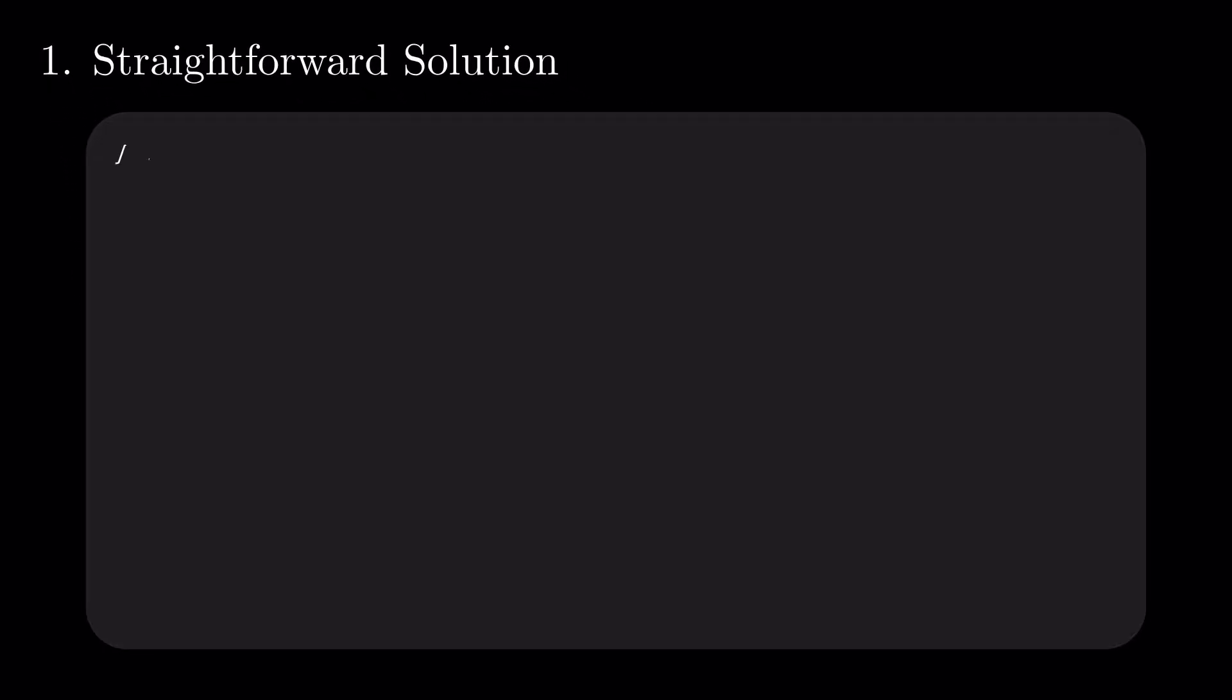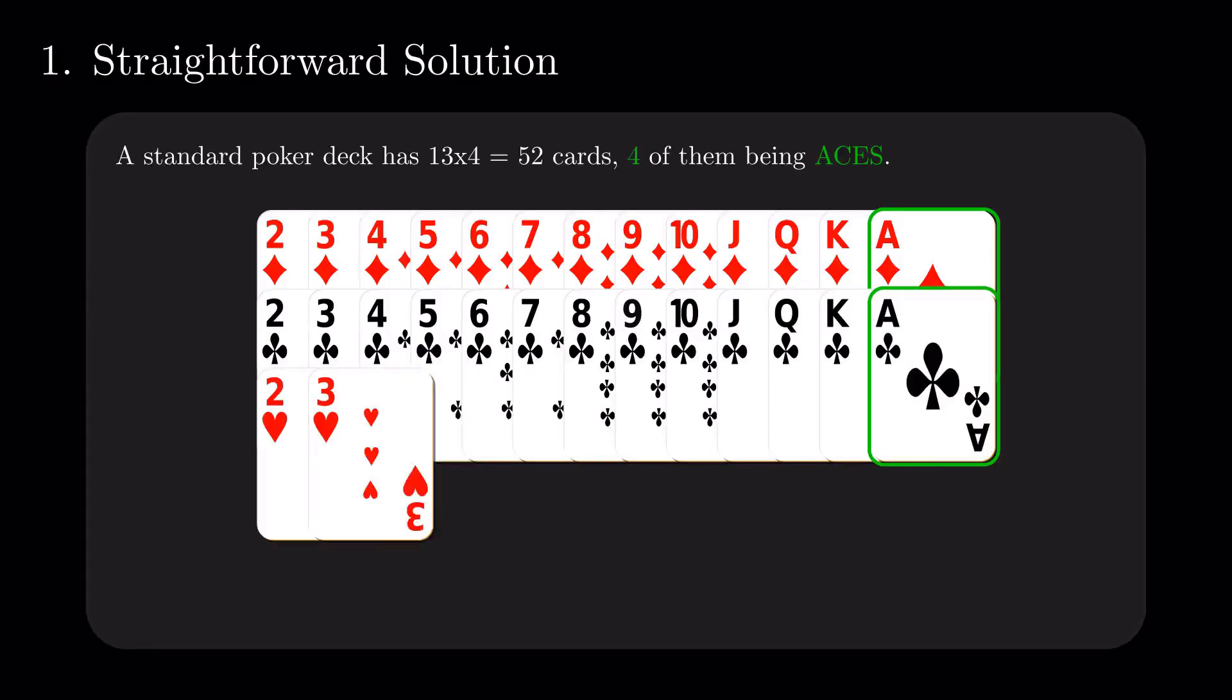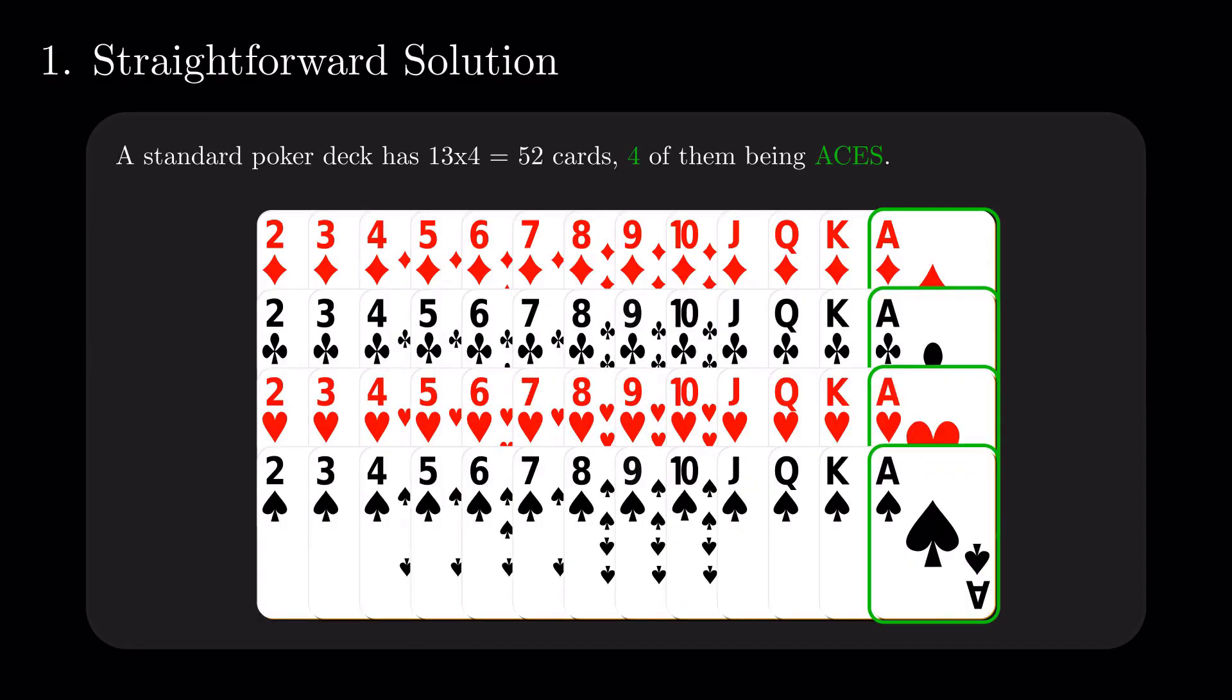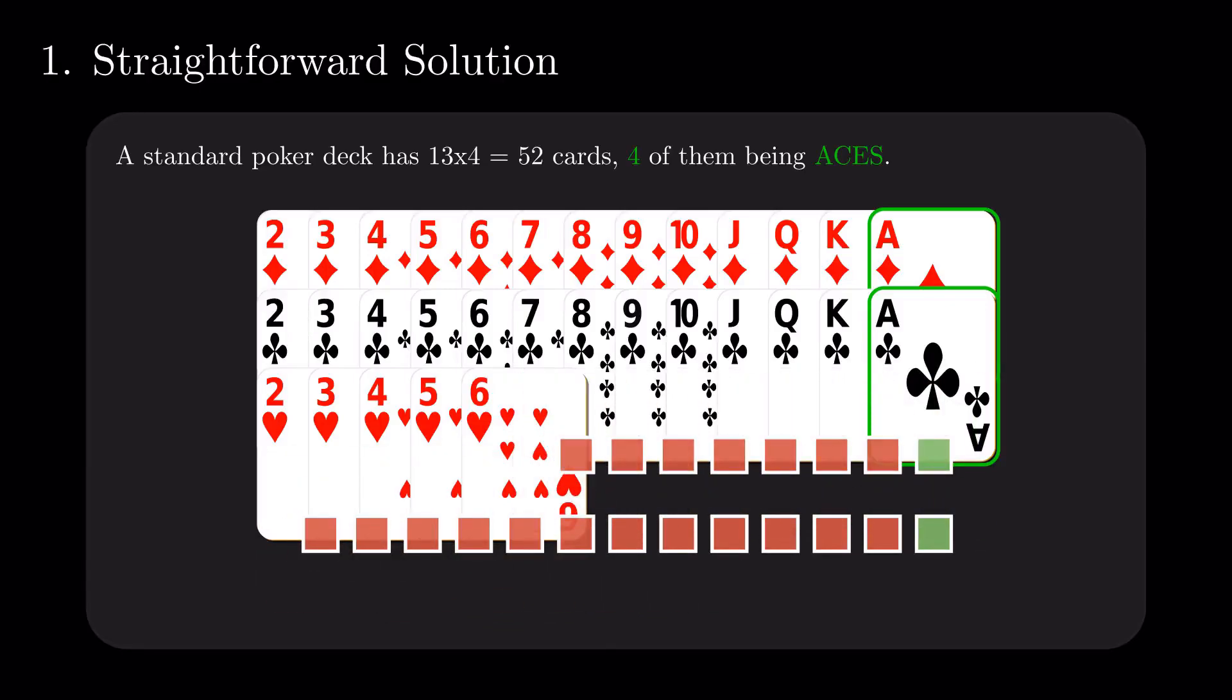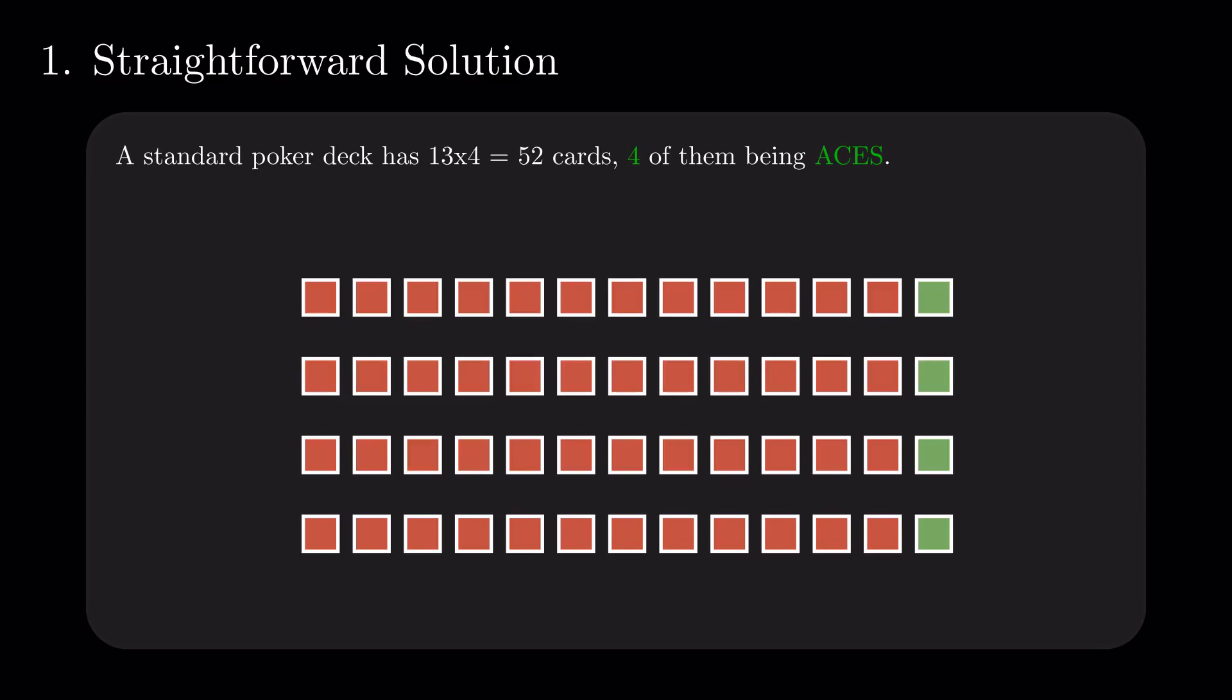A standard poker deck has 52 cards, four of them being aces. The only thing we have to know is summarized as we have four desirable cards and a remainder of 48 undesirable ones. How does the number of non-aces affect our result?